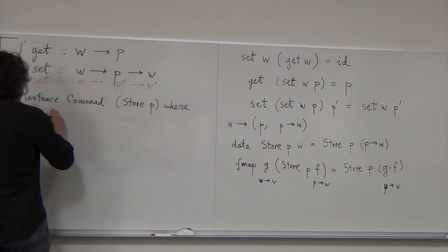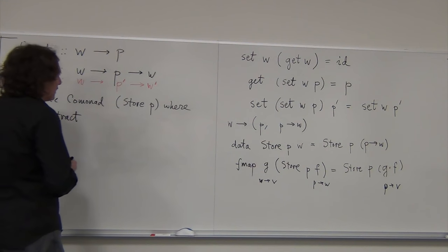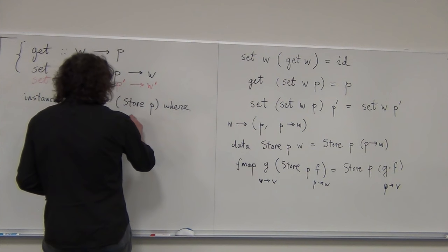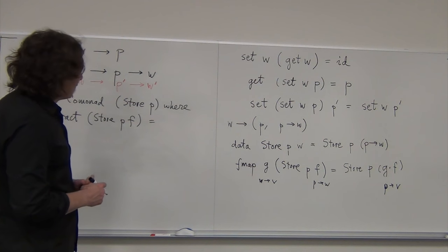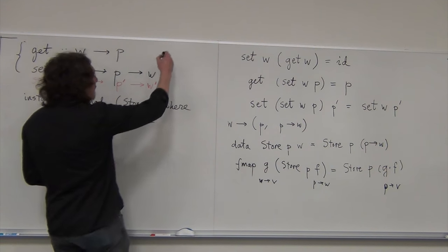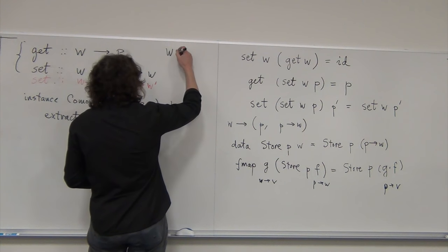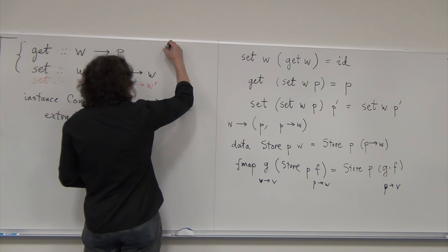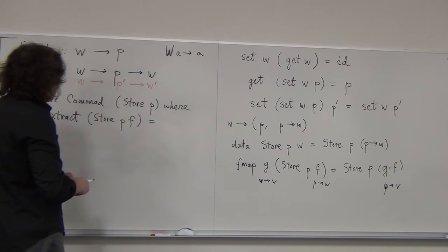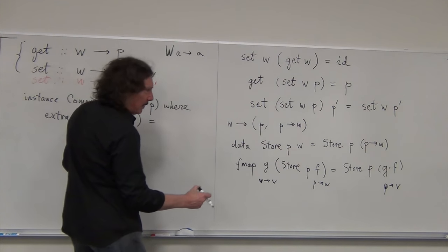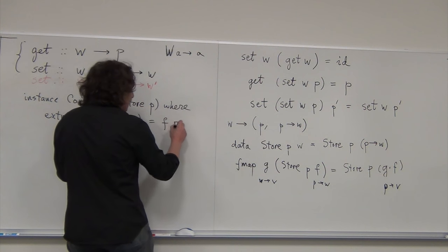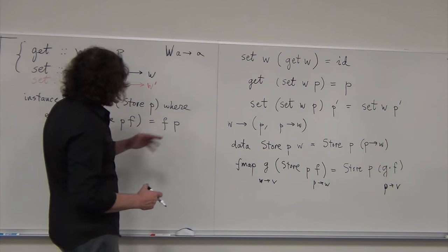A comonad has two operations. First, `extract`: it takes `Store p f` and must extract a W. The way to get W from this is to take the function F and apply it to P. So `extract (Store p f) = f p` — applying the function to the stored value produces our W.